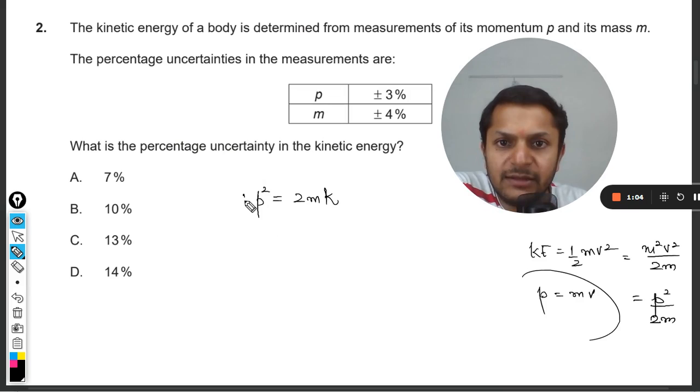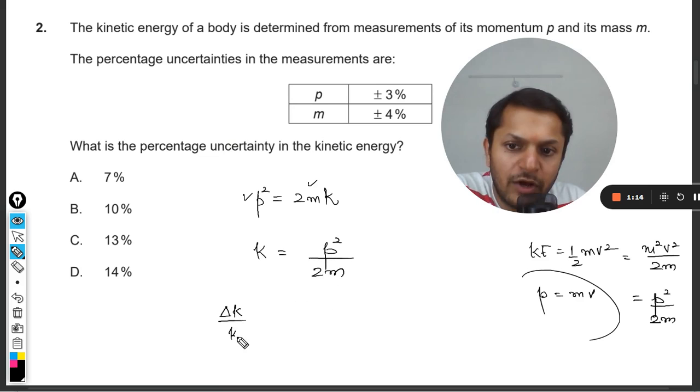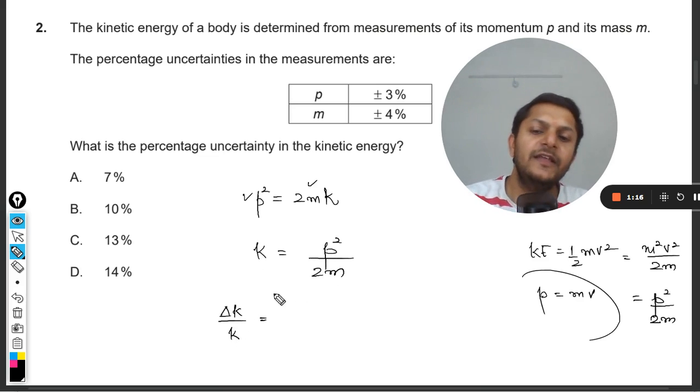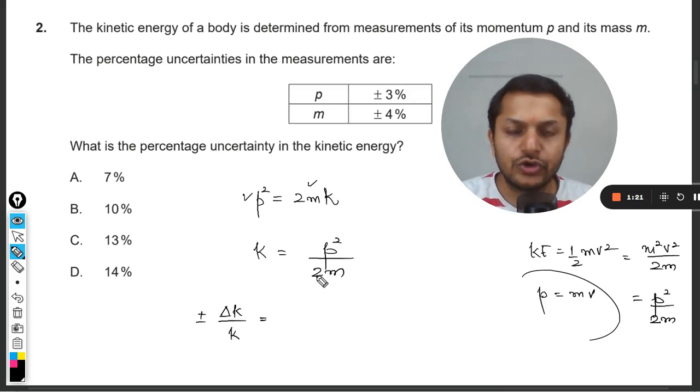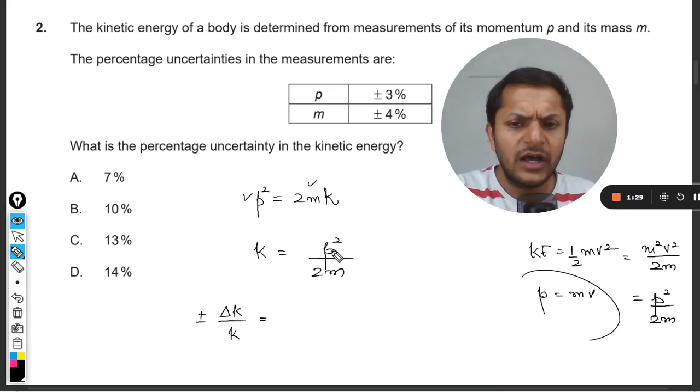The error in the momentum and the mass is given, so I can recreate the formula for the kinetic energy: it will be p² by 2m. So clearly by using the principle of fractional uncertainty we can write this. This plus minus will be equal to, we are not talking about the 2 because it's a constant. We only consider the variables in the uncertainty.